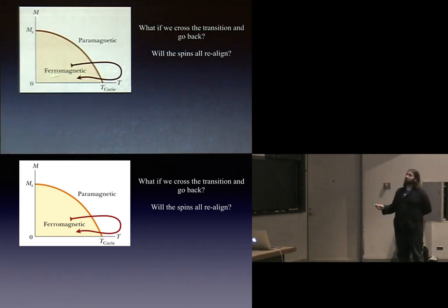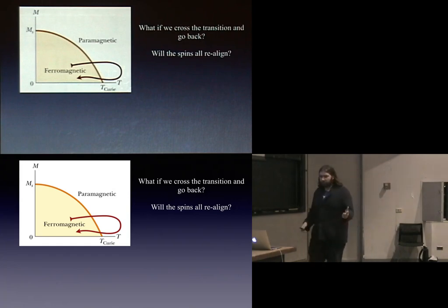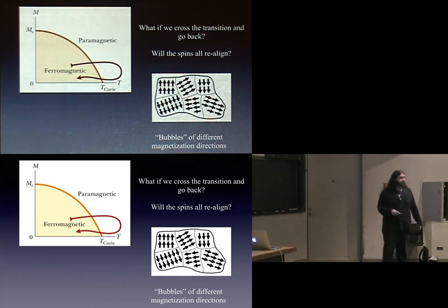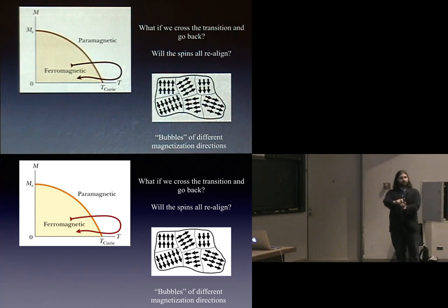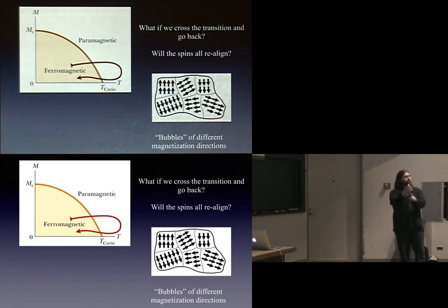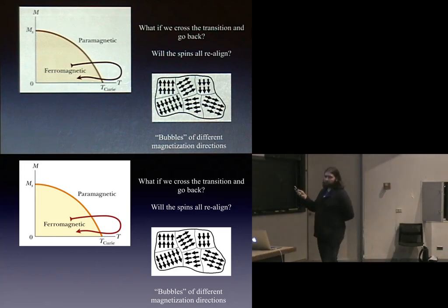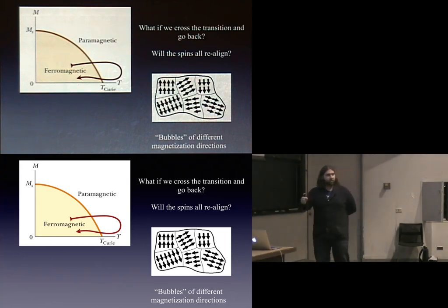What happens if I take my magnet, heat it up, and cool it back down? You'd think all the spins would perfectly realign, but that's not actually what happens — they realign in clumps. You get bubbles of different pieces with different magnetic orientations. You heat it up so the spins disorder, then cool it down: because of the north-south-north-south preference, in one clump they start lining up one way, over here in a different direction. These different bubbles are unlike bubbles in boiling water — these are bubbles of the same phase, just with magnetic field pointing in a different direction.